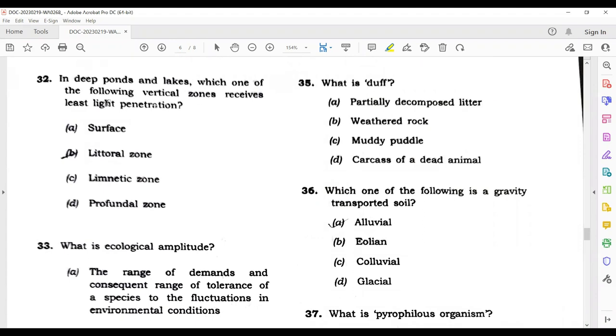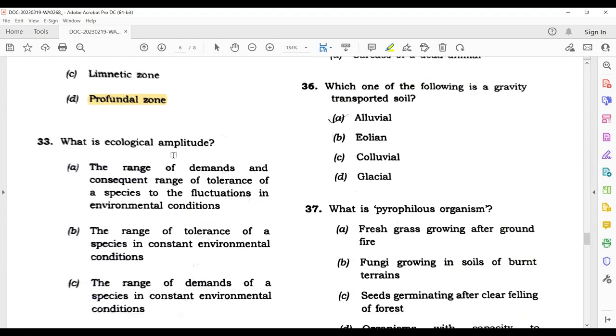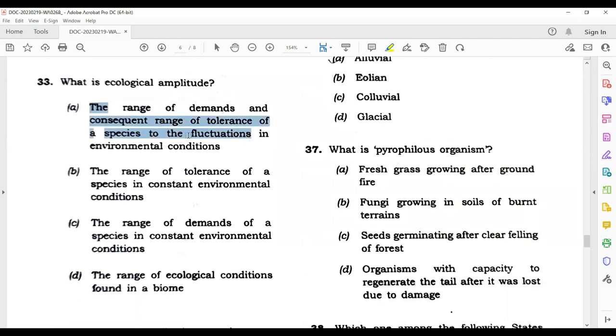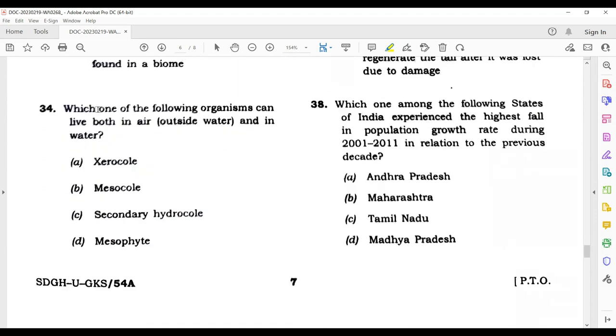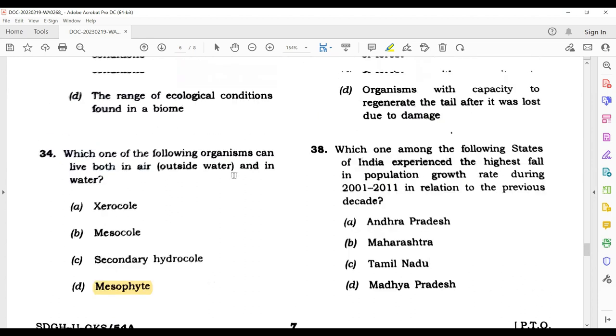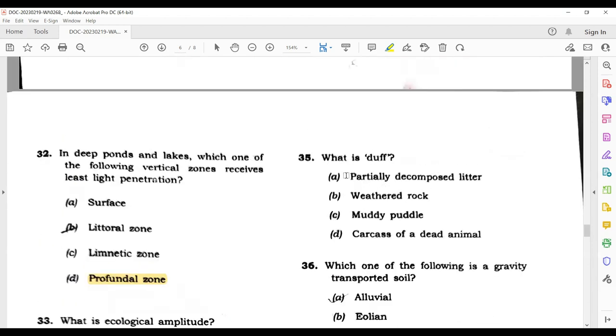BT cotton is a genetically modified crop with a foreign gene from Bacillus thuringiensis. So B.t. is your correct answer to question 31. Next question: in deep ponds and lakes, which one of the following vertical zones receives the least light penetration? Its answer is profundal zone. Next question: what is ecological amplitude? The correct answer is the range of demands and consequent range of tolerance of species to fluctuations in environmental conditions. Question 34: which one of the following organisms can live both in air and in water? Its answer is mesophyte. You can guess it because mesophyte is a kind of plant which can survive on very little water, so it can survive on air as well as in water also.